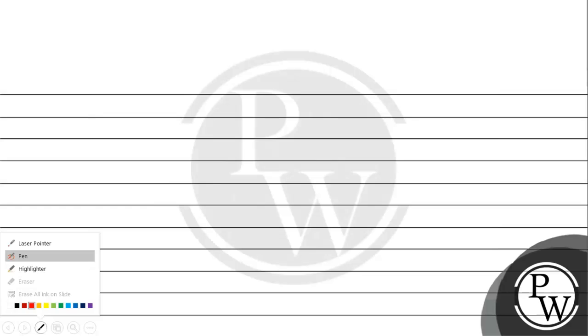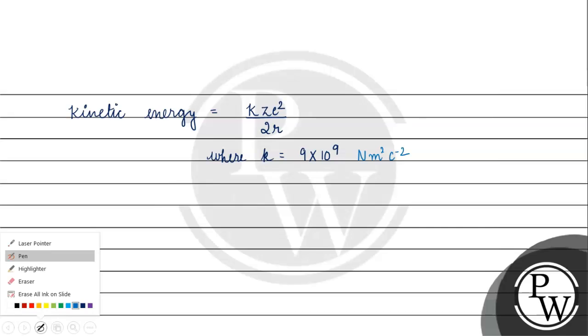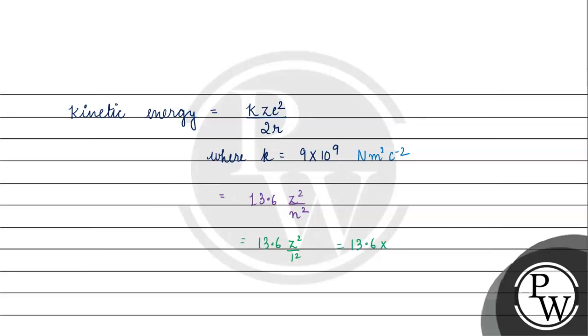If we talk about kinetic energy, kinetic energy is basically KZE square by 2R, where K is equal to 9 into 10 raised to 9 Newton meter square per coulomb square. If we look at the terms of electron volt, kinetic energy for the first orbit will be 13.6 Z square by n square.